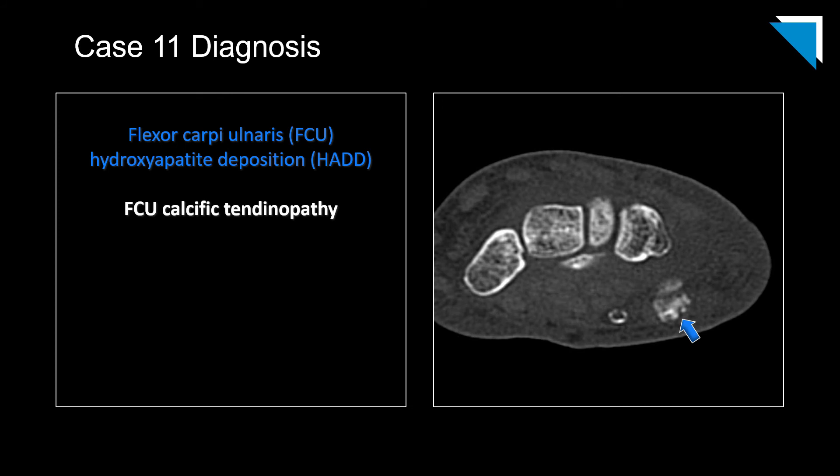This is a case of flexor carpi ulnaris calcific tendinopathy. If you know the imaging appearance, you should be able to make this diagnosis on plain radiography.